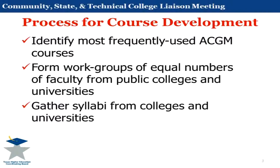We identified those courses, and then we go through and solicit nominations from you folks and from the universities. We pick equal numbers of two-year and four-year faculty from that discipline. Then those faculty gather up syllabi — a bunch of two-year syllabi and a bunch of four-year syllabi — and the faculty go through and compare: what are the common elements in the course descriptions and in the learning outcomes?